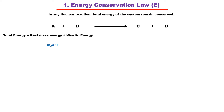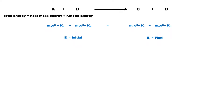Rest mass energy is included because particles move with relativistic velocity. If the initial total energy equals the final total energy, the reaction is allowed. However, to verify energy conservation in a reaction, you must know the mass of all particles and their kinetic energy — information that is not always given in exam questions.